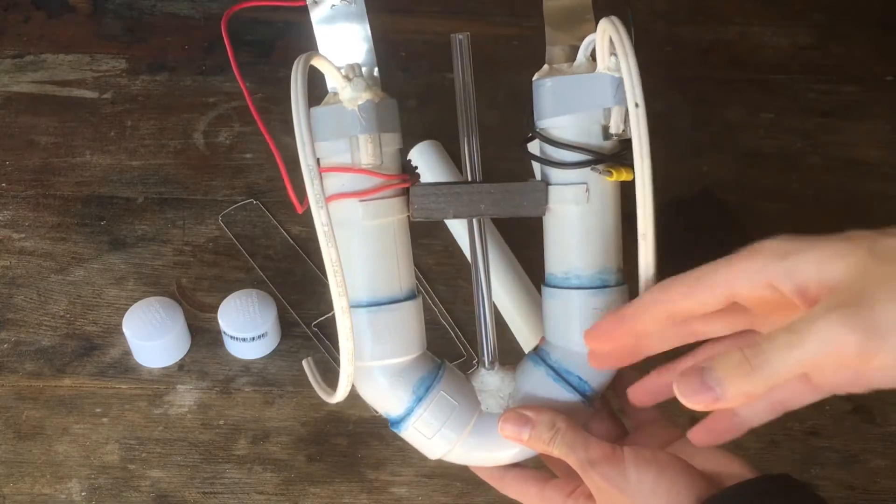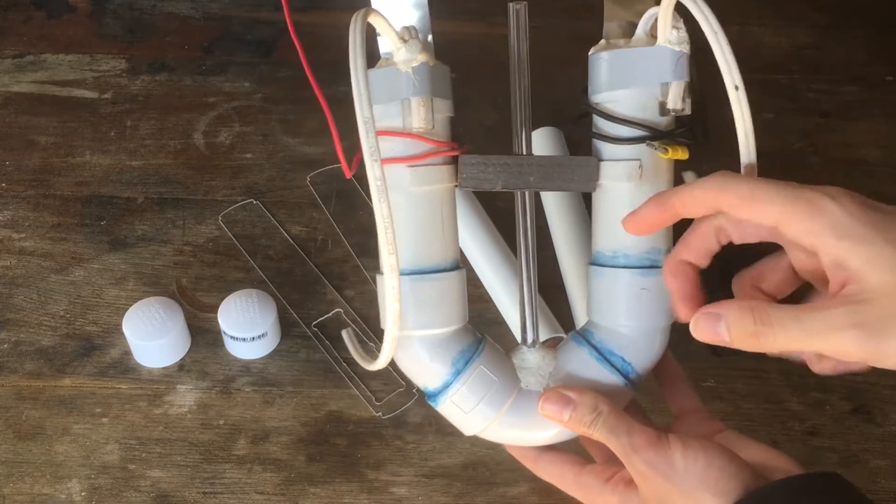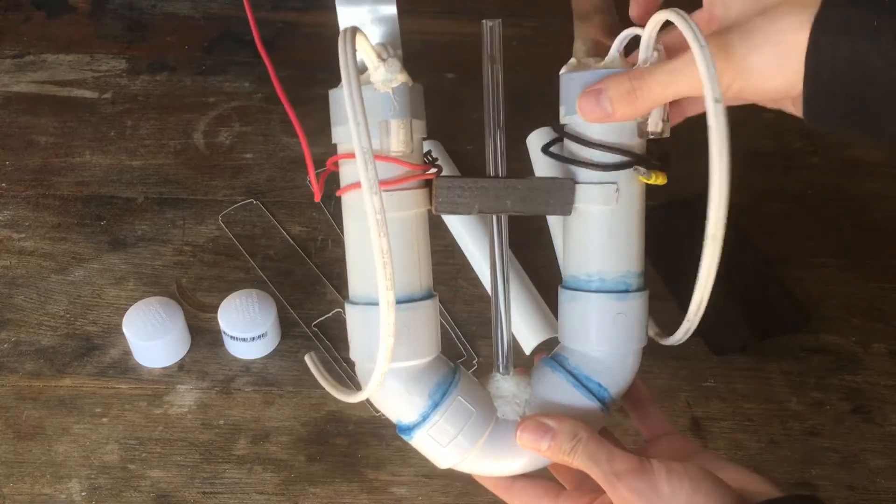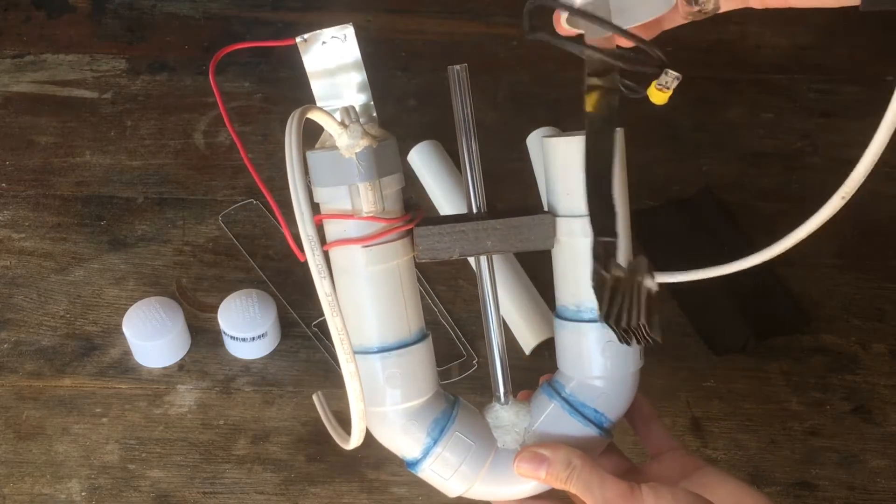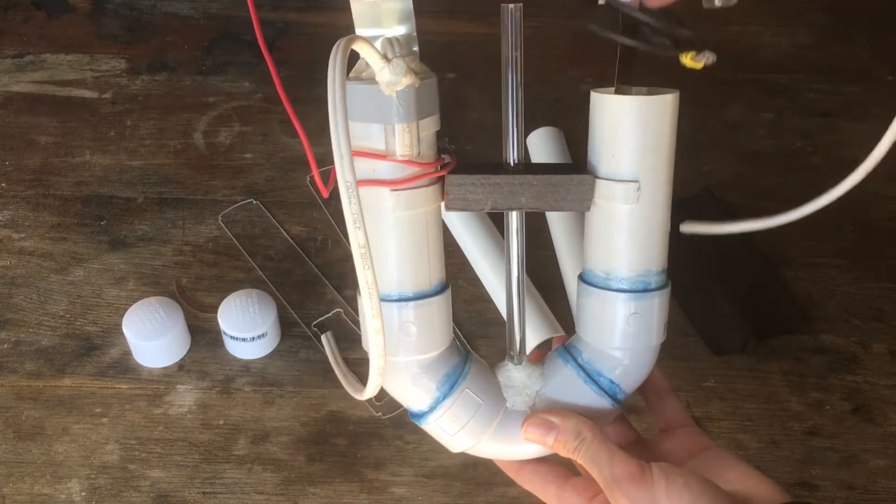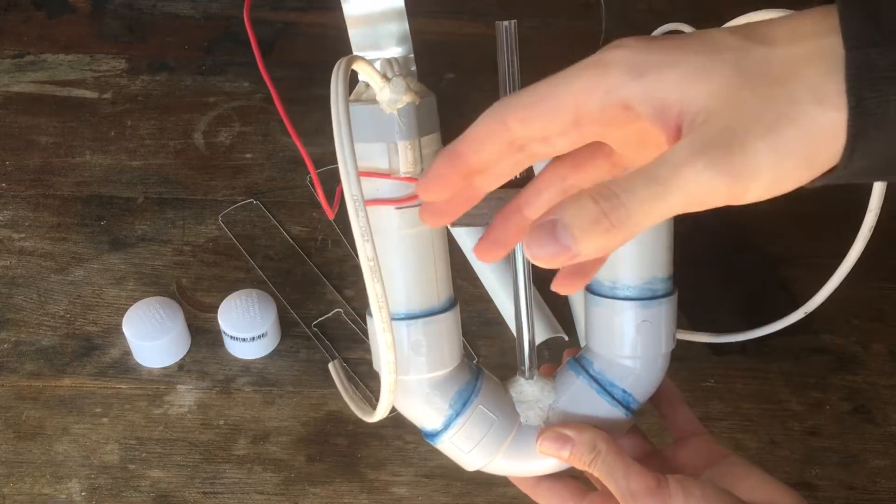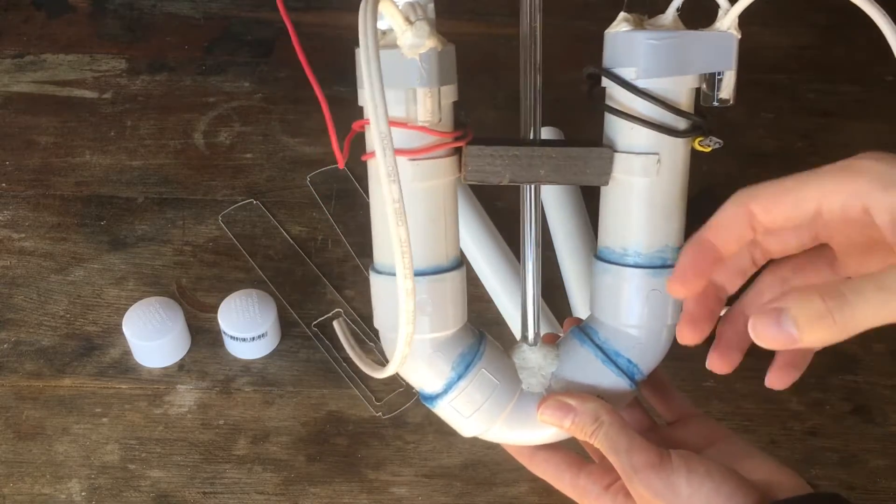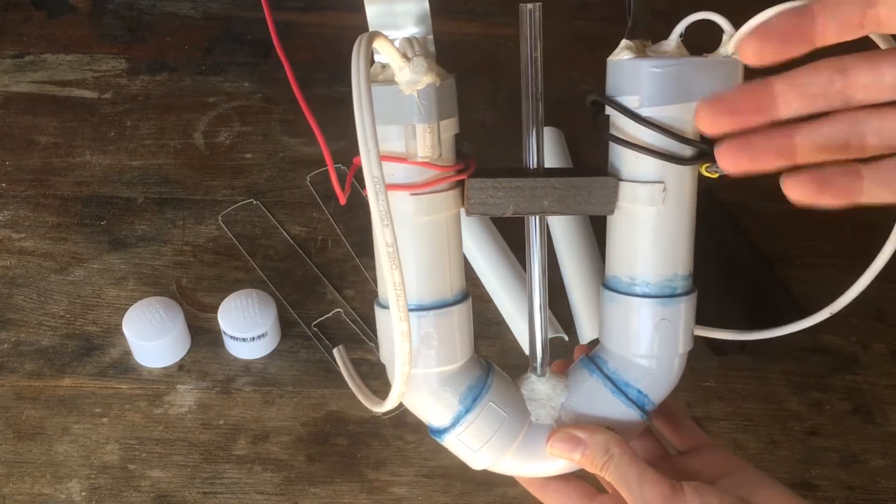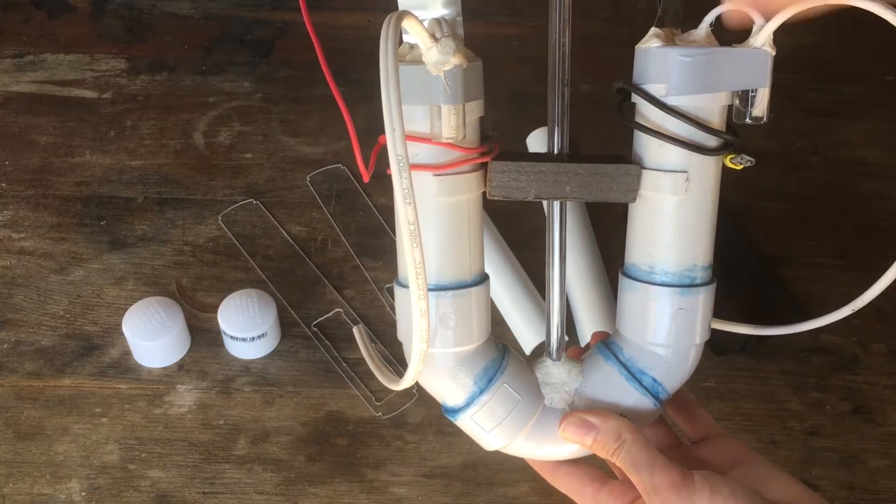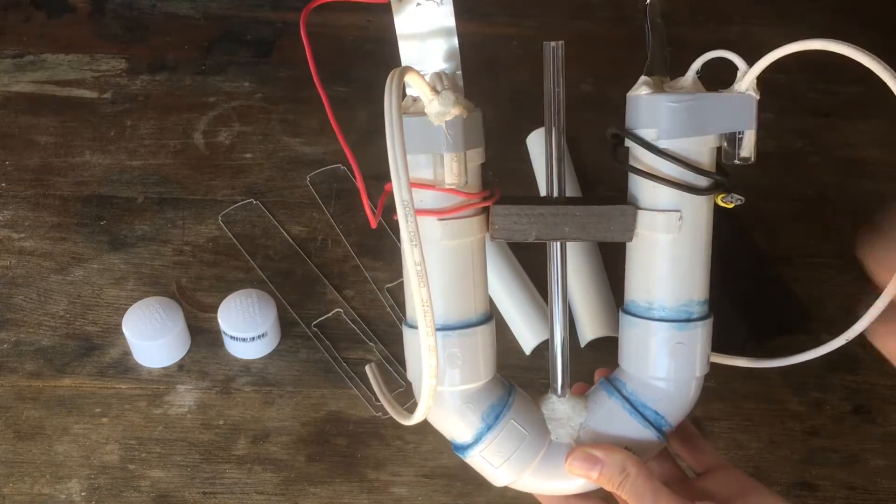So we fill this PVC pipe chamber with sodium hydroxide solution. We have nickel electrodes which sit in the solution and by passing current through the cell, we're able to generate hydrogen gas and oxygen gas off the cathode and anode respectively.